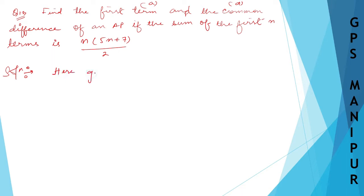So here given, what is given, given that, here given that, what is given is AN? No, sorry, what is given is sum of the first N term, that is SN is given, which is N, 5N plus 7 divided by 2.